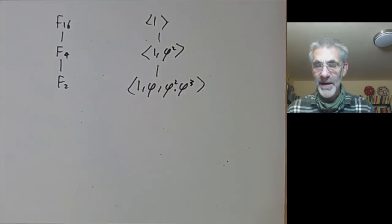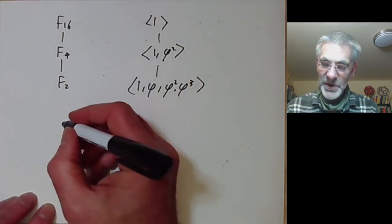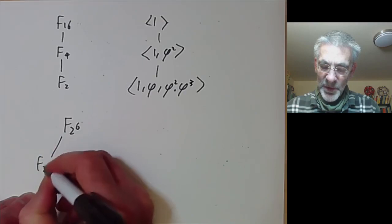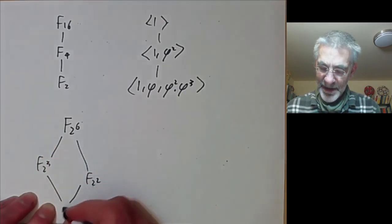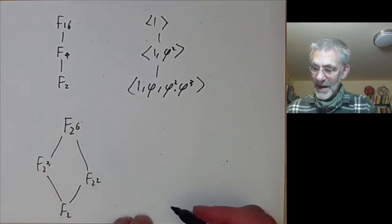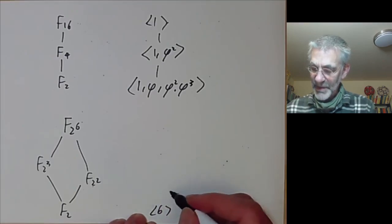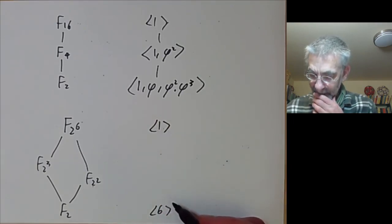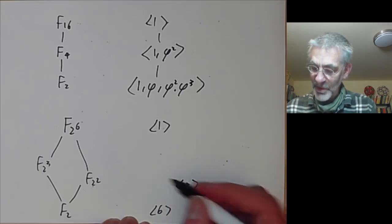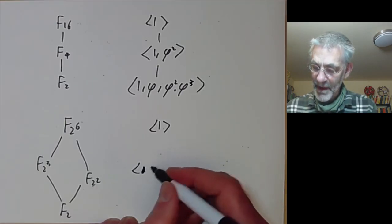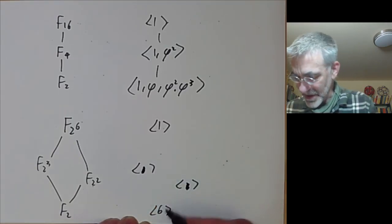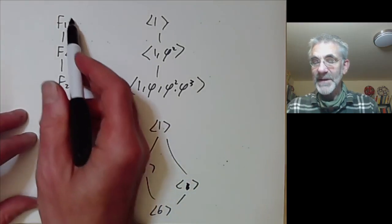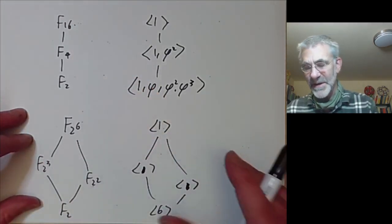The chain of subgroups and subfields is linear in this case, but that's not always true. For instance, if we took the Galois field of order 2⁶, we would have intermediate fields F₈ and F₄, both containing F₂, and correspondingly a cyclic group of order 6 with subgroups of orders 3 and 2. The subfield lattice of a finite field isn't always linear, but it is always very easy to work out.